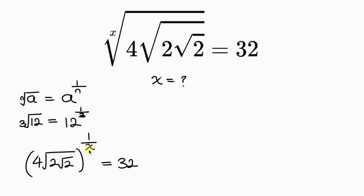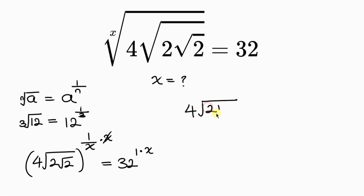In order to get rid of this x in the denominator, I multiply the power on the left hand side by x and also multiply the power on the right hand side by x. The x's cancel on the left, leaving 4 times the square root of 2 times the square root of 2 equal to 32 to the x.